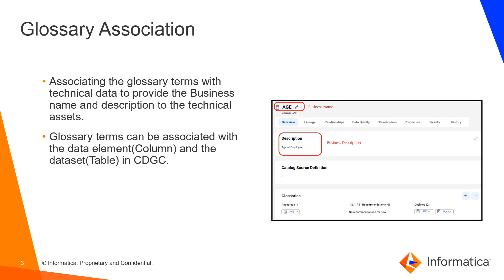Glossary Association is associating the Glossary term with the technical data to provide a business name and description to the technical asset, which will help the business user to understand more about the technical asset. In CDGC, Glossary terms can be associated only to the data element which is a column, and to the dataset which is a table.